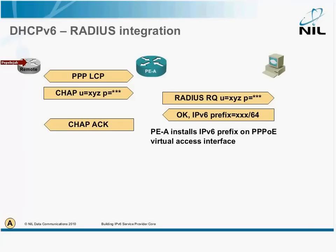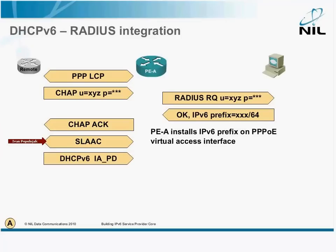If the remote end is a router, it will send a DHCPv6 request. So first, of course, we do the stateless auto-configuration — no problem — and then the DHCPv6 request comes in.